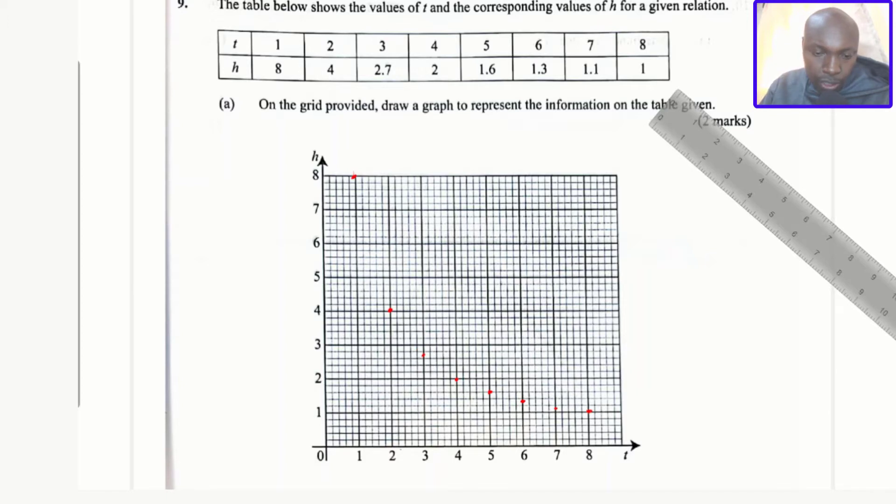It's good to note the scale of the graph. You can see for one centimeter there are five small squares, so one small square therefore represents 0.2. That will be very important when you're plotting these. Three, two point seven.